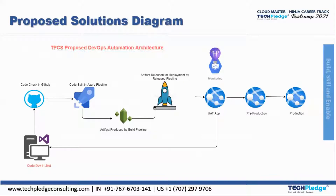Let's look at the proposed DevOps automation architecture diagram. Developers will write code in Visual Studio using .NET. The code check-in is done in GitHub, which triggers a CI/CD pipeline. Code is built in an Azure build pipeline, producing an artifact — a zip folder — which is then released for deployment via the release pipeline. Different releases can be created for different versioning needs.